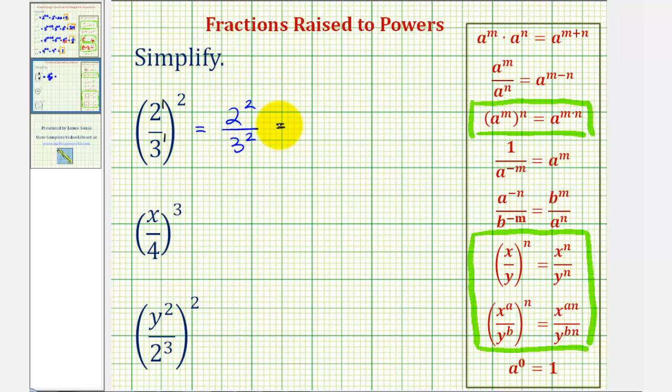Well, two to the second is equal to four. And three to the second is equal to nine. So two-thirds squared, or two-thirds to the second power, equals four-ninths.